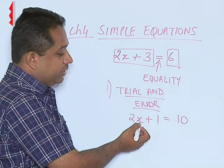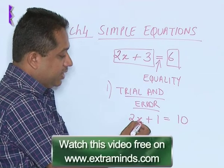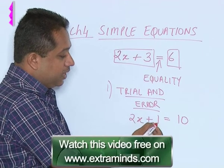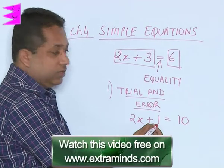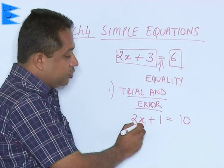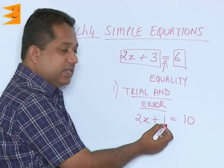Now you have to start with, let us say, x is 1. Now x is 1, then what happens? 2 into 1 is 2 plus 1 will become 3. So 3 and 10 are obviously not equal. Substitute x as 3, 2 into 3 is 6, 6 plus 1 is 7.